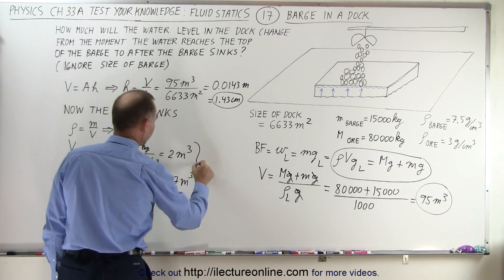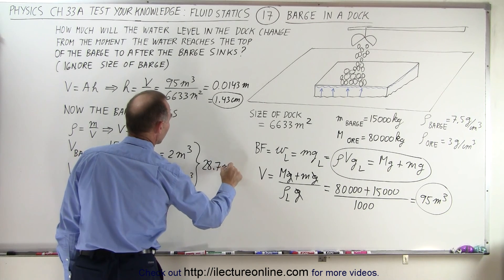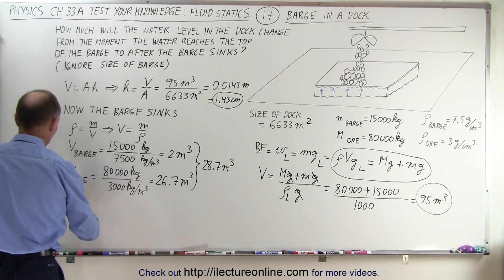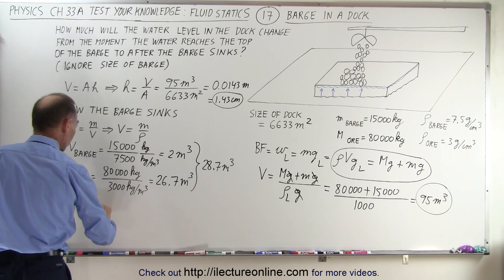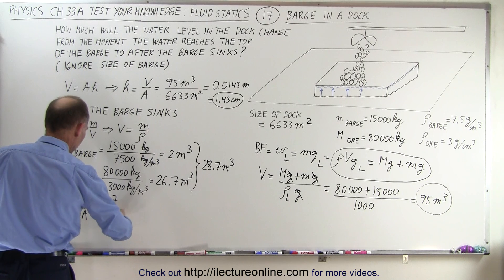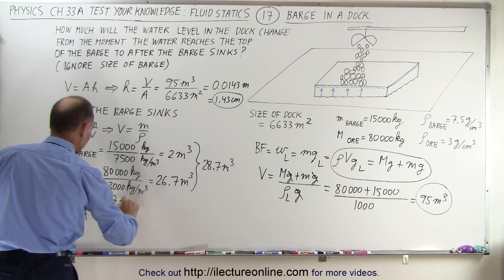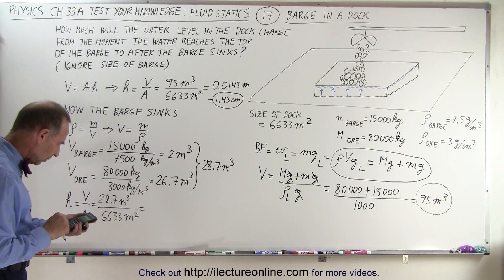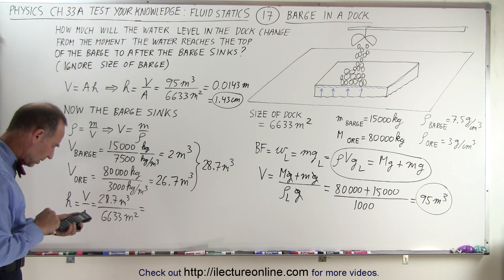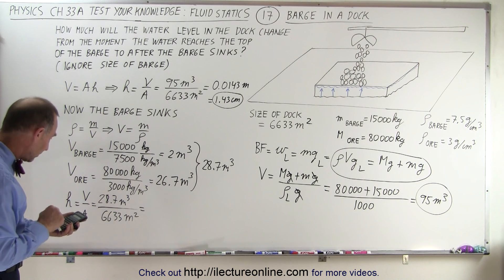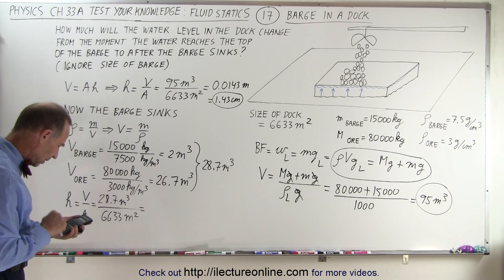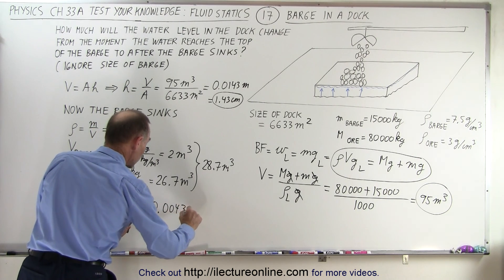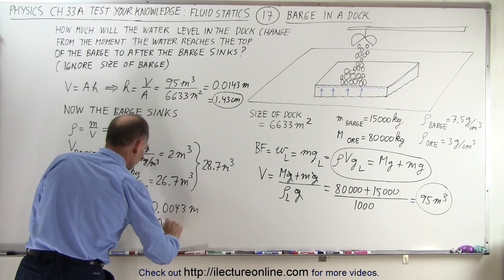The total volume is 28.7 cubic meters. So the water displacement height is volume divided by area: 28.7 cubic meters divided by 6,633 square meters, which equals 0.0043 meters, or 0.43 centimeters.